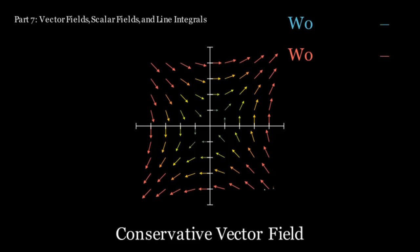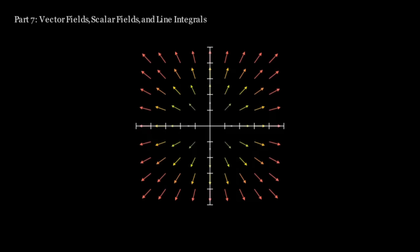Vector fields can be conservative, meaning that any line integral on them is path independent. This is very analogous to conservative forces, i.e. gravity, where the work done on particles is path independent. And in fact, gravity has a vector field, although this field varies depending on the objects that are present.